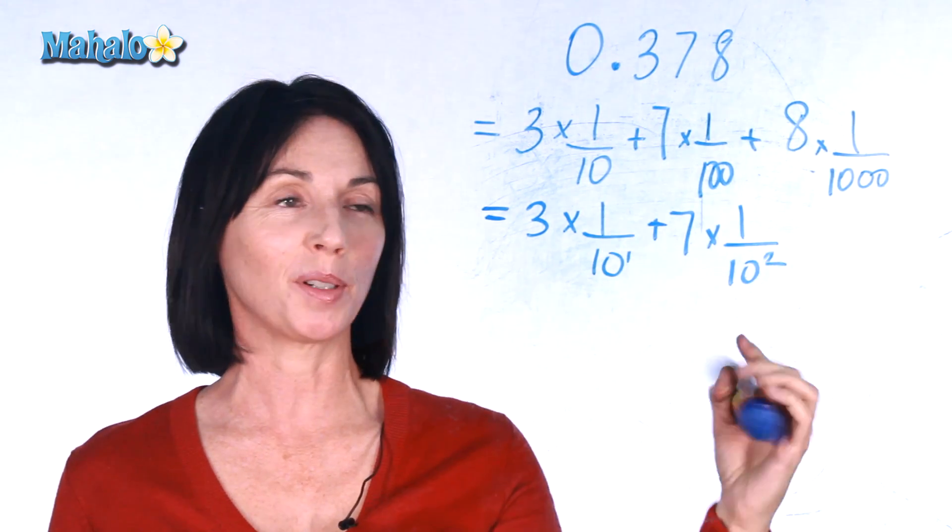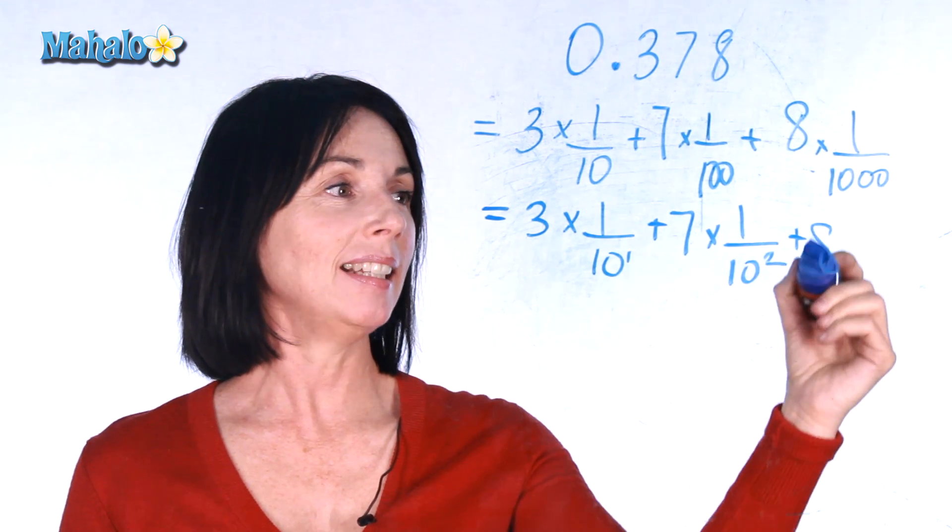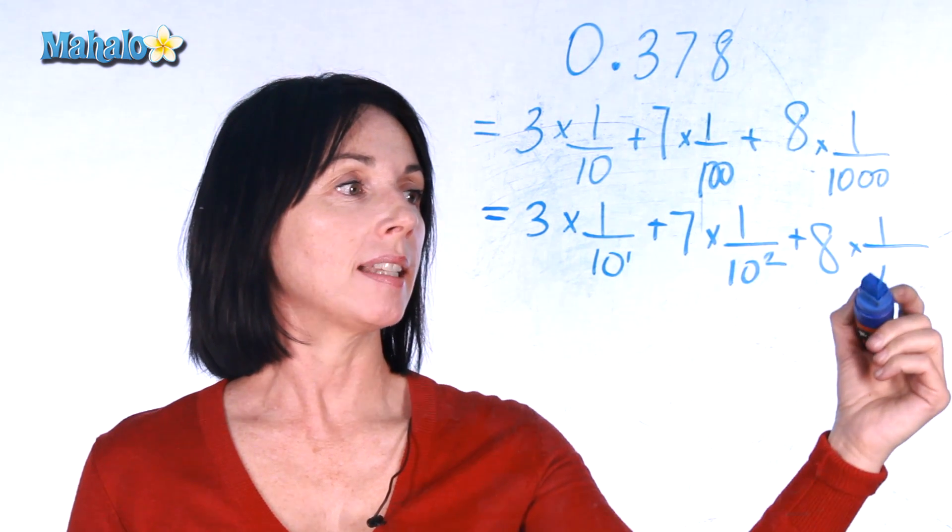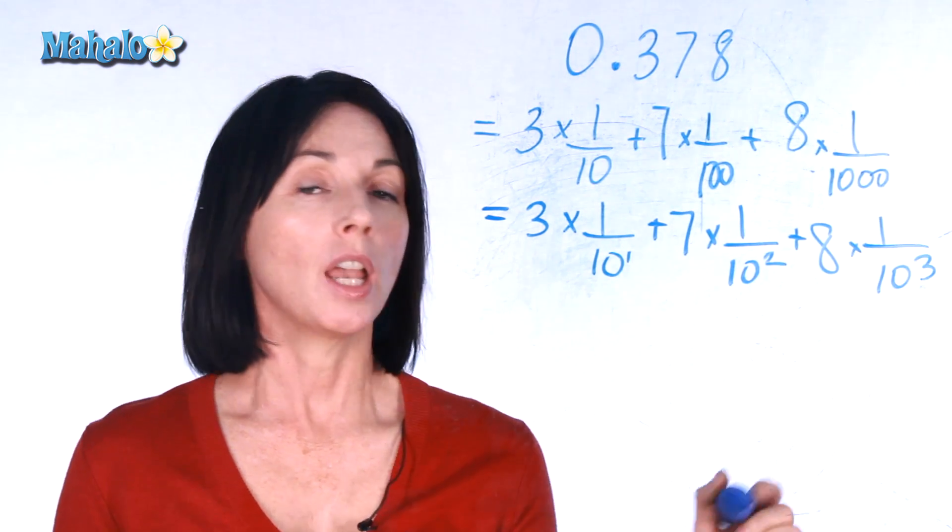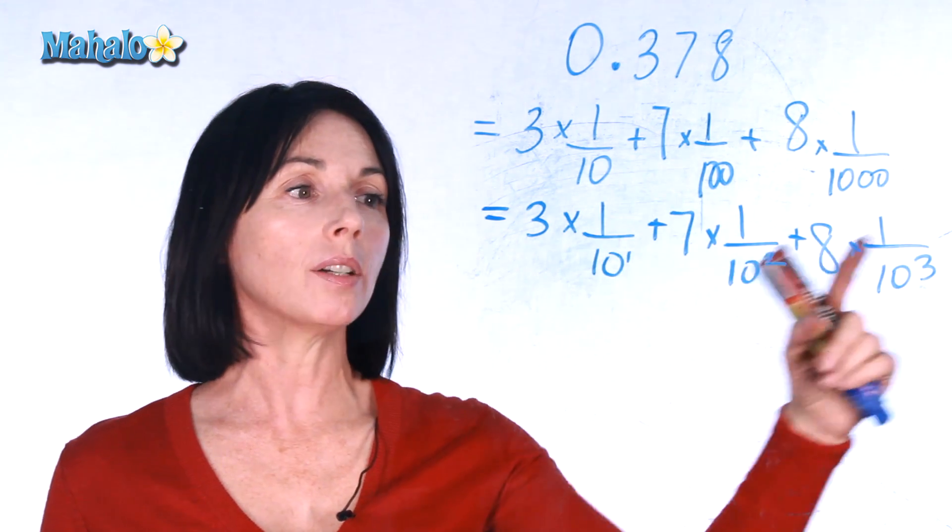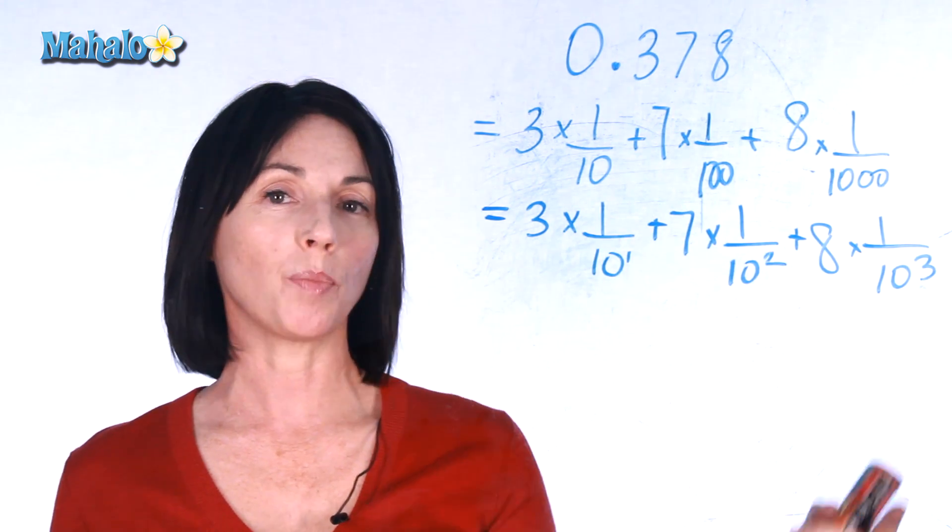Don't forget two zeros gives me an exponent of 2. Plus 8 times 1 over 10 to the power of 3. So now instead of writing all these zeros we have these nice clean looking exponents.